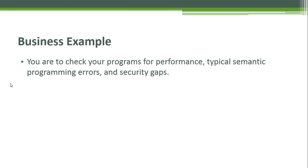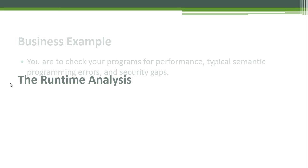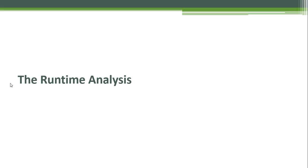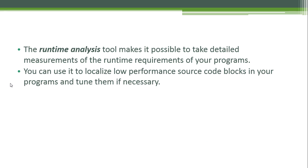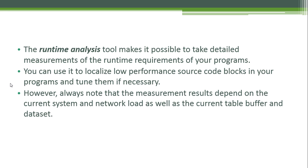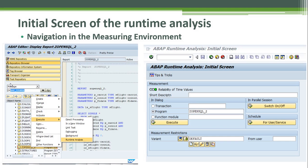Business example: you are to check your programs for performance, typical semantic programming errors, and security gaps. The runtime analysis tool makes it possible to take detailed measurements of the runtime requirements of your programs. You can use it to localize low-performance source code blocks and tune them if necessary. Note that measurement results depend on the current system and network load, as well as the current table buffer and data set.